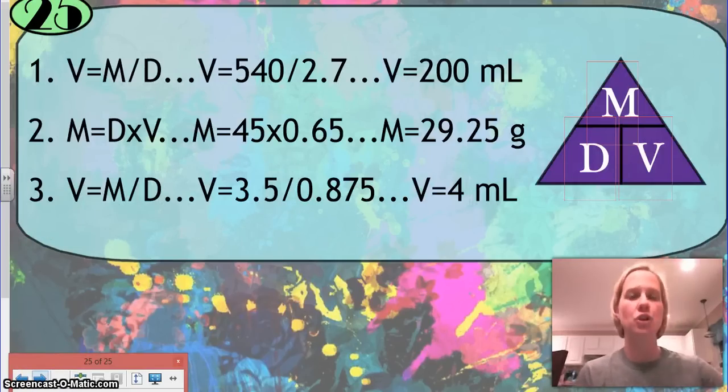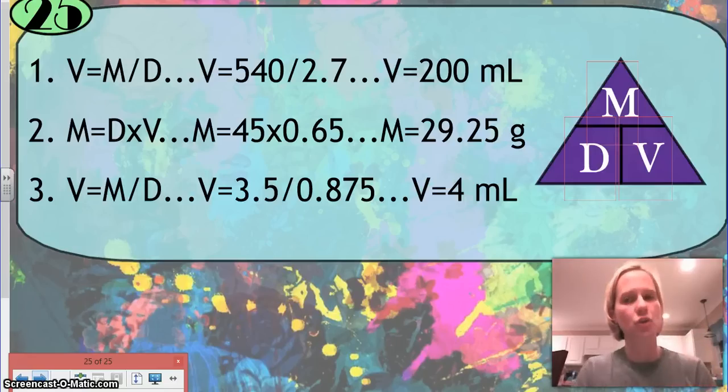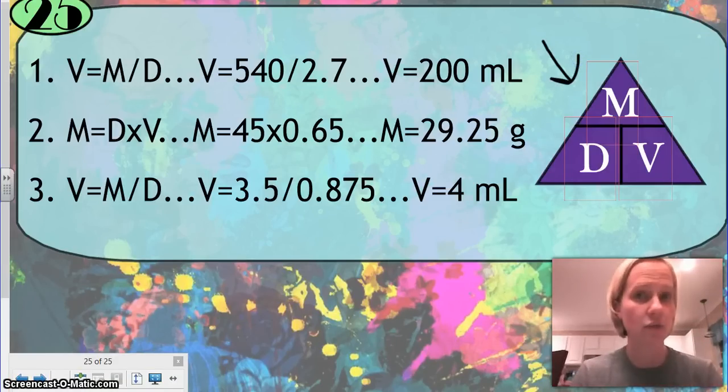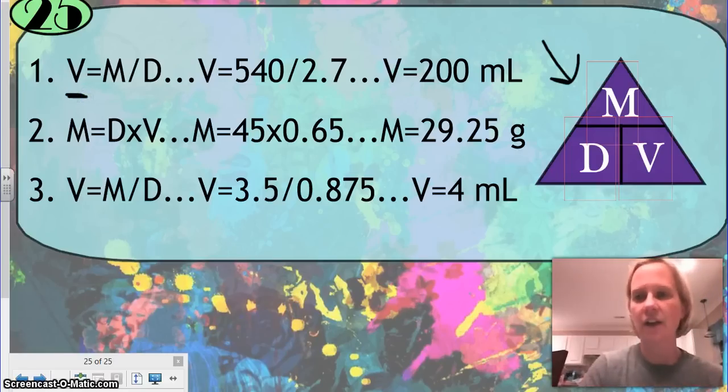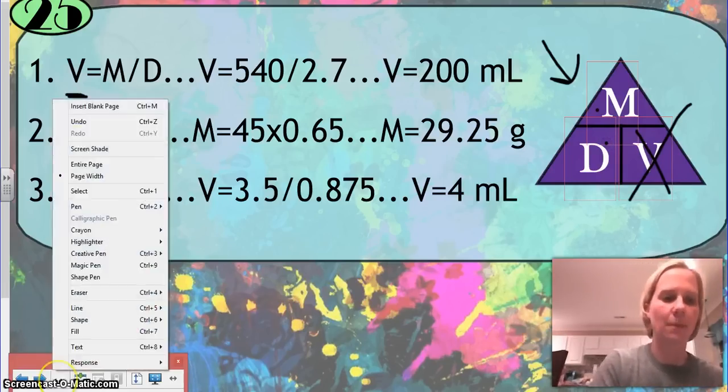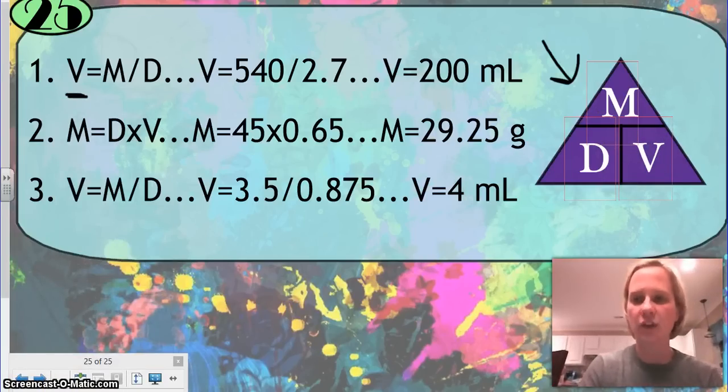Number 24, you're going to make sure you go through your balancing equations. Number 25 is going through and doing all of our density problems. It's very important that you know this triangle. To use the triangle, all you have to do is cover up the letter that you're solving for. If I'm solving for volume, if I cover up my V, it's M divided by D. If I'm solving for density, I would cover up my D, and it would be M over V. And, if I'm solving for mass, cover up my M, and it's D times V.